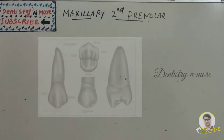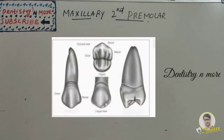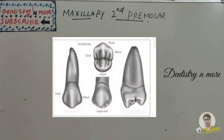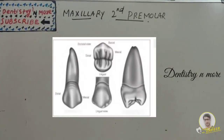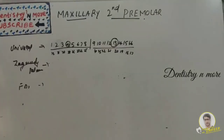Hello everyone, welcome back to another session in Dentistry and More. We are continuing our dental anatomy sessions. Today's session is about the maxillary second premolar. So far we have finished maxillary central, lateral, canine, first premolar, and mandibular.